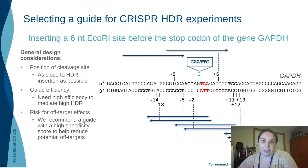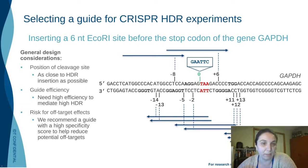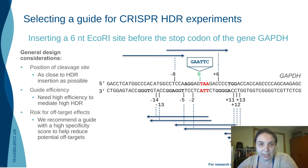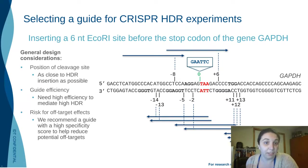The first step in designing any HDR experiment is guide selection, and there are three big factors to consider. First is the position of the cleavage site — generally you want to be as close to the HDR insertion as possible. Second is guide efficiency — you need high efficiency to mediate high levels of HDR, and a poor efficiency guide will negatively impact your potential HDR rates. The third factor is the risk for off-target effects, so we recommend using a guide with a good specificity score using our guide RNA tool or others available to predict off-targets.